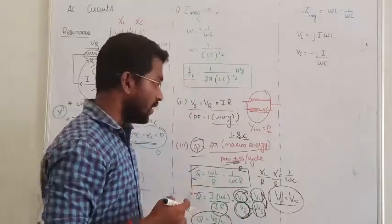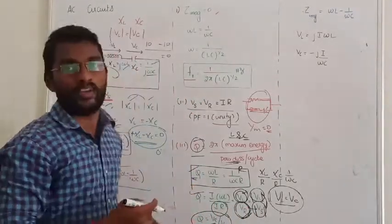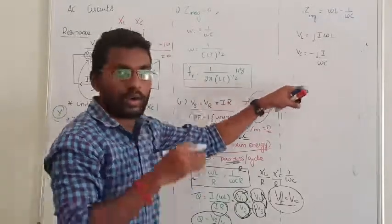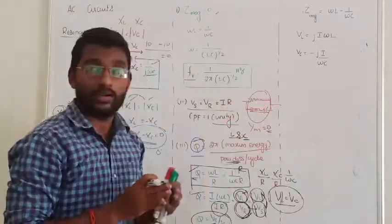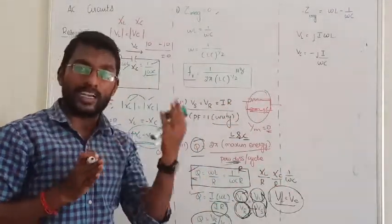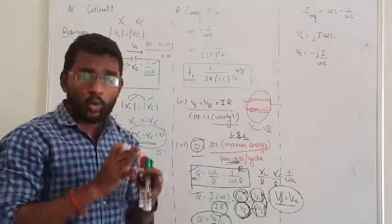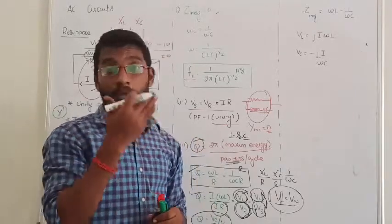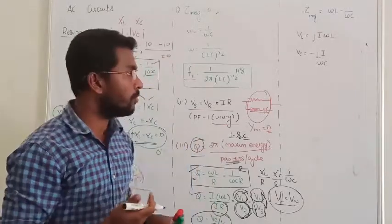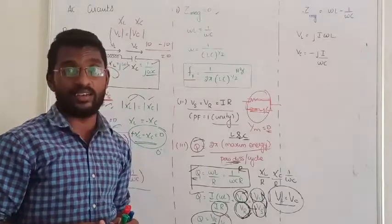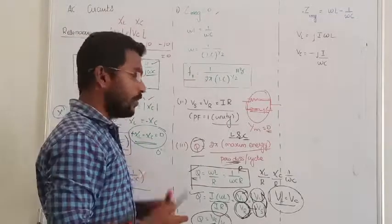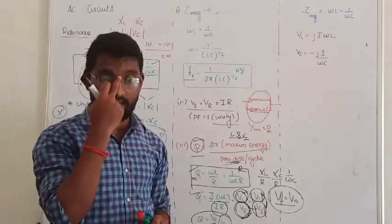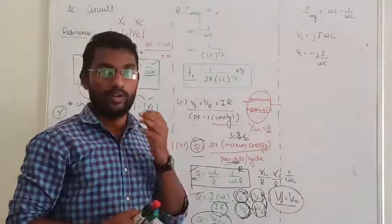Next, we have to see a few more properties: at resonance, the maximum voltage drop across the inductor and the maximum voltage drop across the capacitor — we will see those in the next lecture. If you have any doubts, you can ask in the comment section. Thanks for watching our videos. Thank you all.